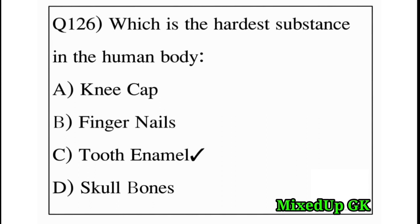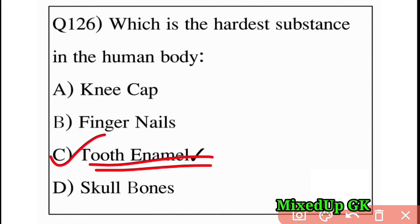Next question: which is the hardest substance in the human body? Option A: kneecap, Option B: fingernails, Option C: tooth enamel, Option D: skull bones. The answer is Option C: tooth enamel, which is the hardest substance in the human body.